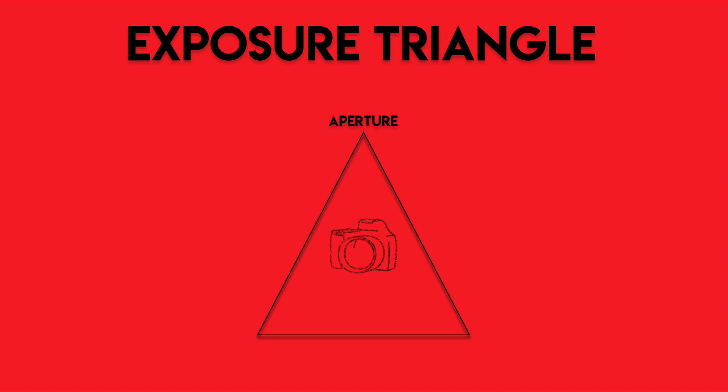So in this video, we will see how to deal with those situations and get sharp, good-quality images even in low light. So without wasting any time, let's get started. When you look at the exposure triangle, you have three things: aperture, shutter speed, and ISO.